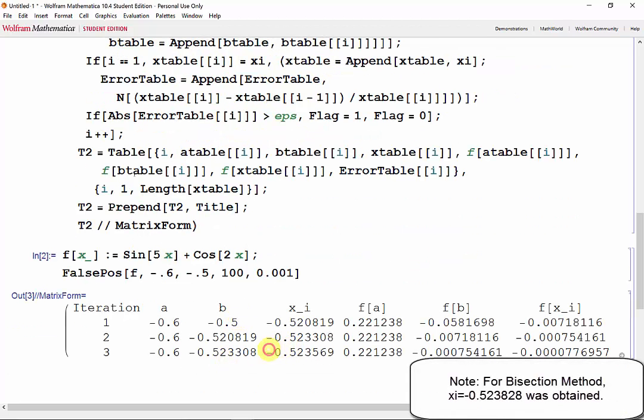And we got to a slightly different value of xi, but as expected the false position method converged much faster.